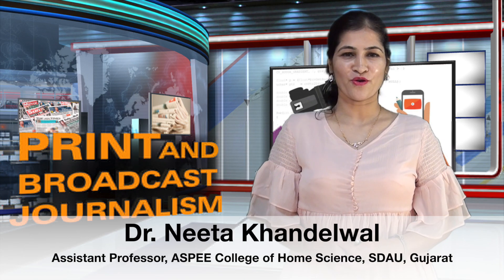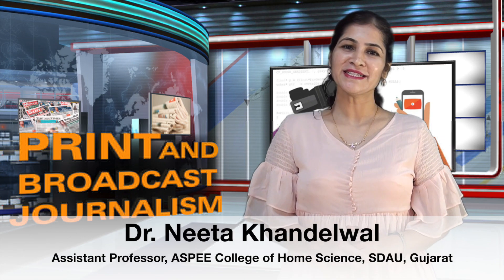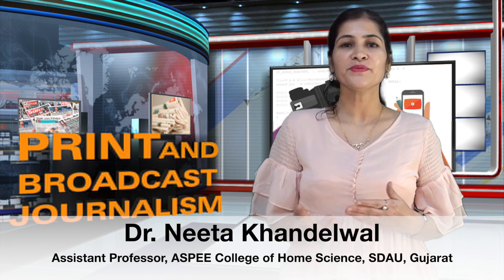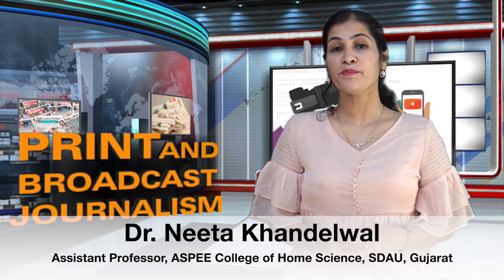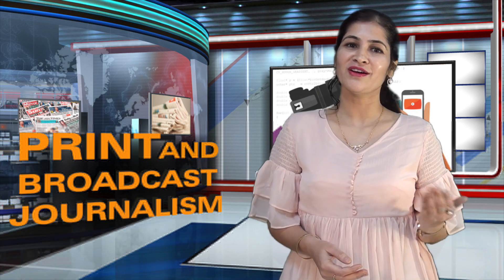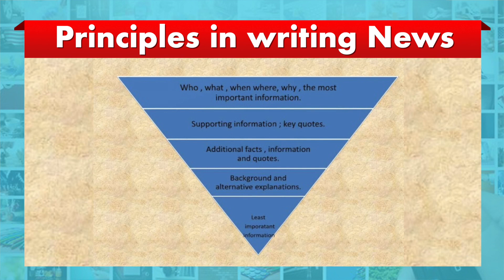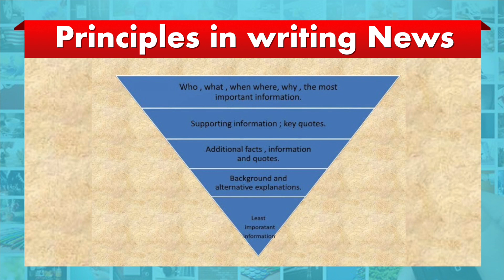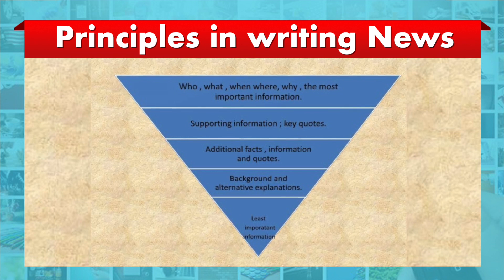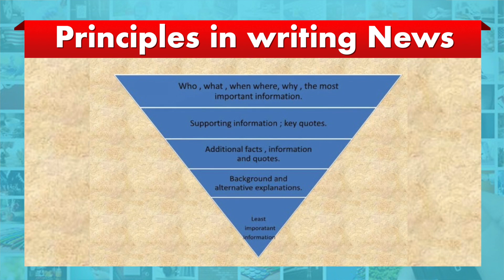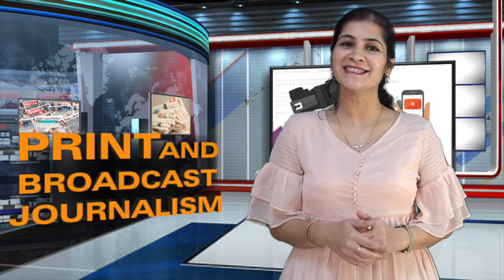We now come to the next point: principles in writing news. News is something that is a current event and has an impact on people in one way or other. During writing news, it flows from most important to least important, like an inverted pyramid. The inverted pyramid is a style of news writing in which the main facts are at the top of the story, followed by less significant facts towards the bottom of the body. This gives the reader the essential facts first.